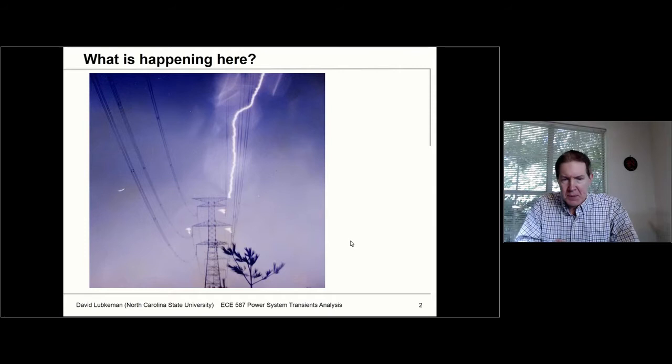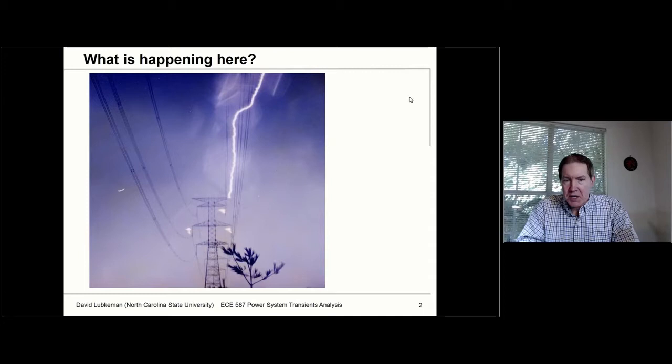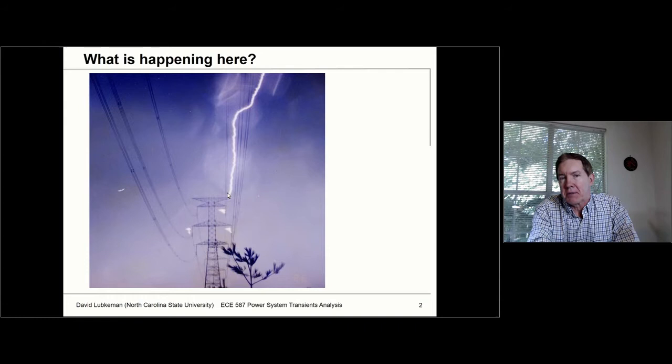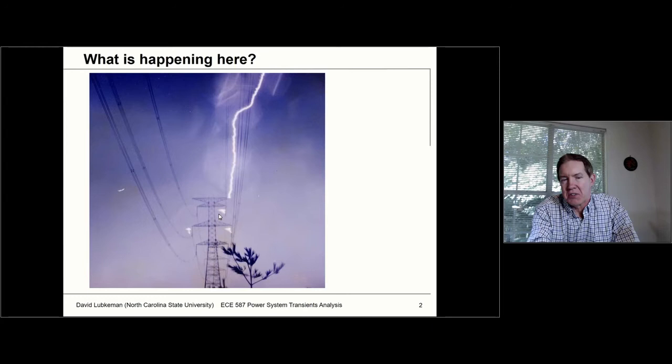Before we get into the theory, I want to show you a high-speed picture of a lightning strike because it's relevant to what we'll be discussing. You can see a bolt of lightning coming from overhead, coming down from the clouds and hitting the tower. What you see are these flashes or ignitions around the insulation.